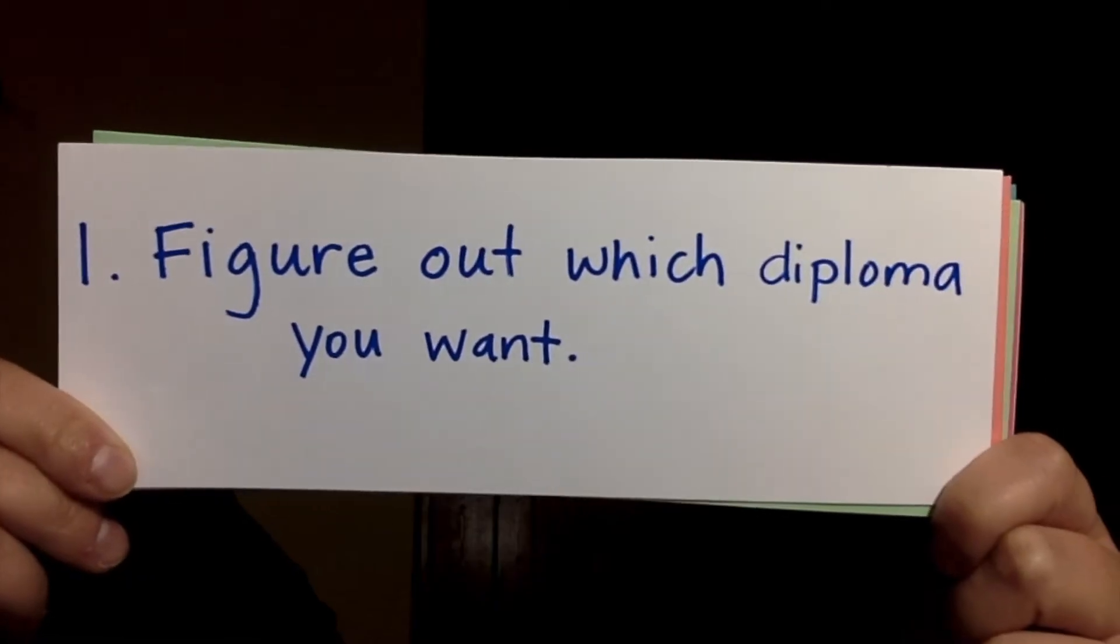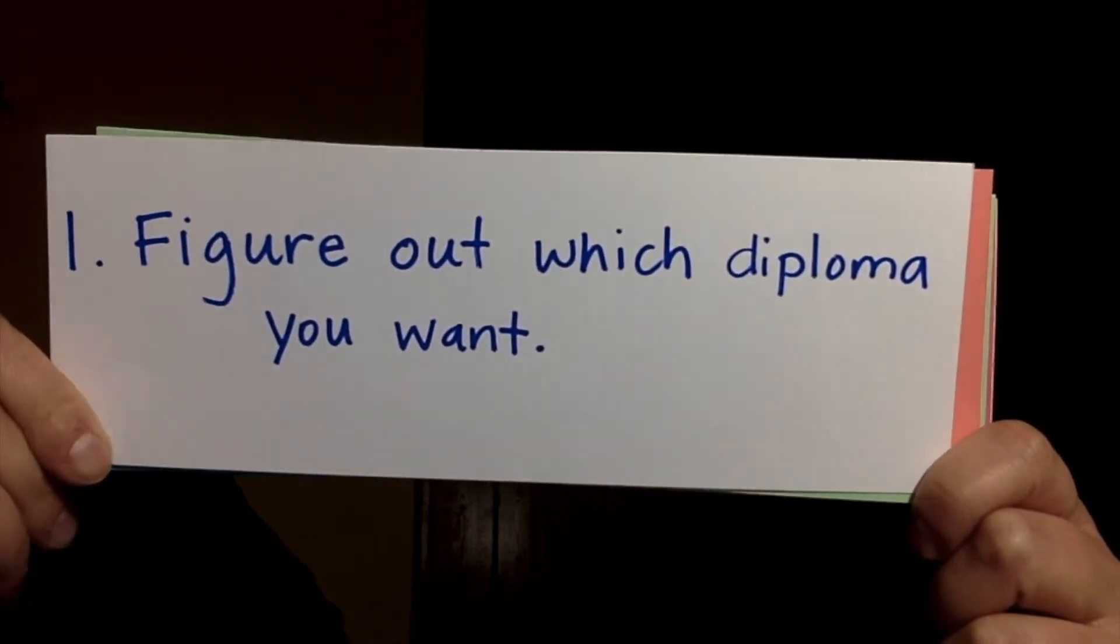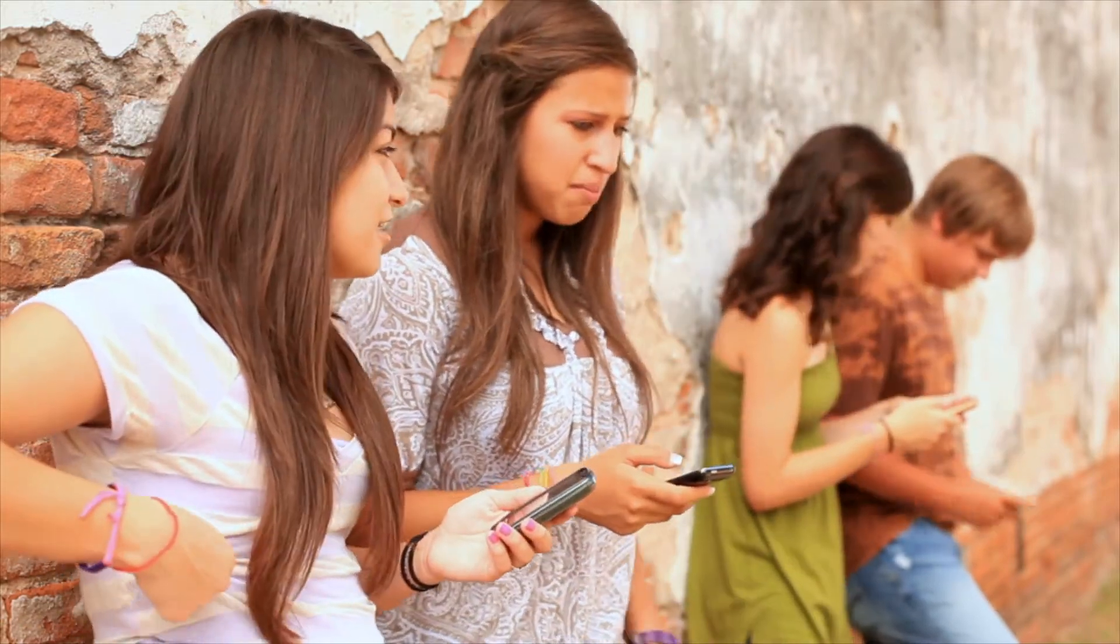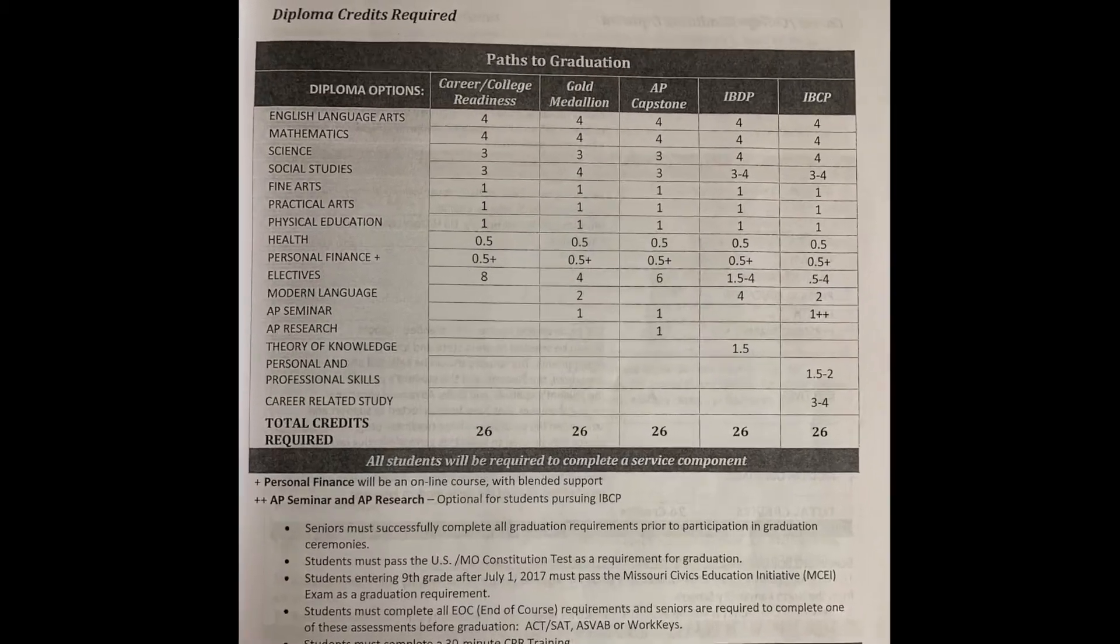So follow these steps. Figure out which diploma you want. Pick the best diploma for you. You can ask your friends and family for advice, but do your own thing. And make sure you explore all your options, which start on page eight.